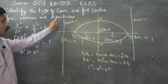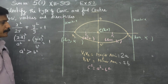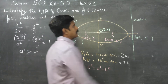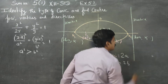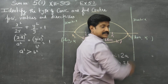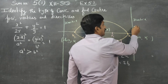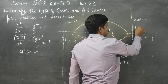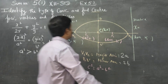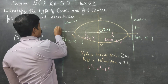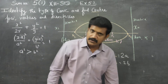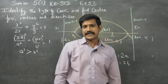For the directrices of a horizontal ellipse, the equation is x = h ± a/e, where e is the eccentricity.